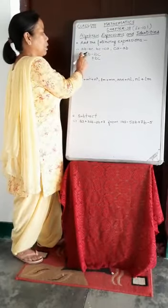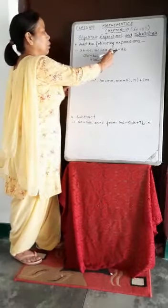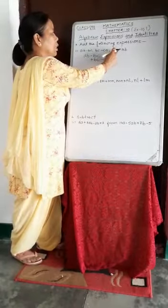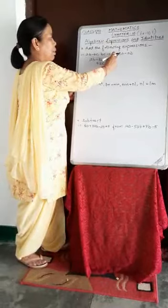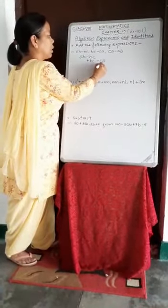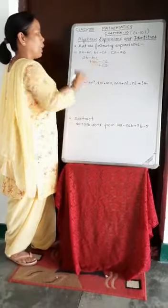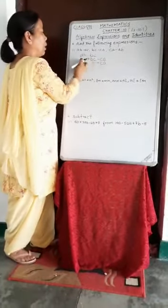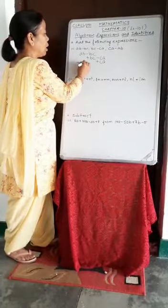This is AB. AB and CA are not like terms, so this CA will be written separately. Now the third term is CA minus AB. CA is here and it has no sign, therefore there is a sign of plus. CA will come below CA because these two are like terms, and minus AB will come below this AB.